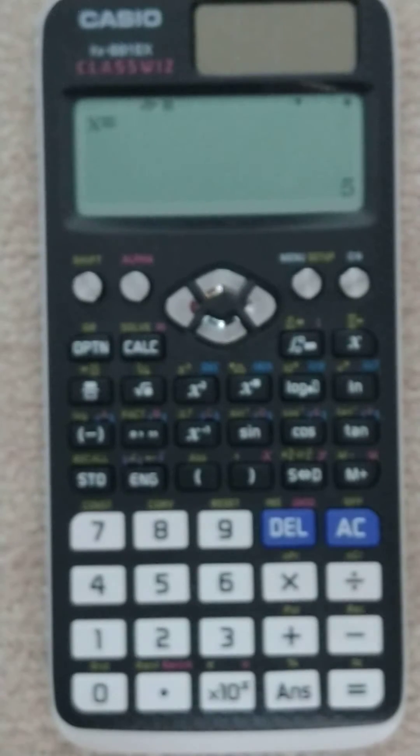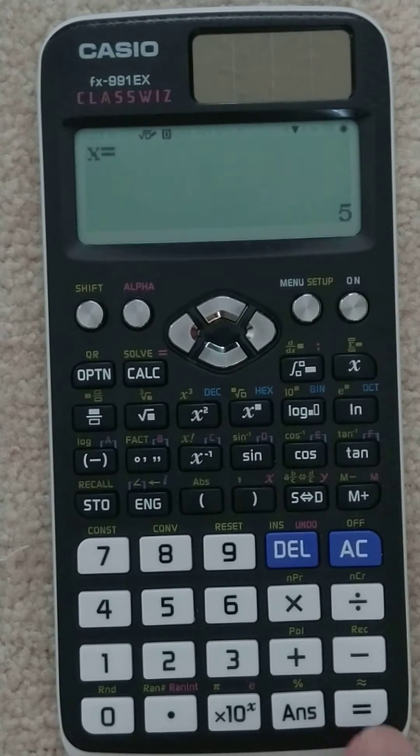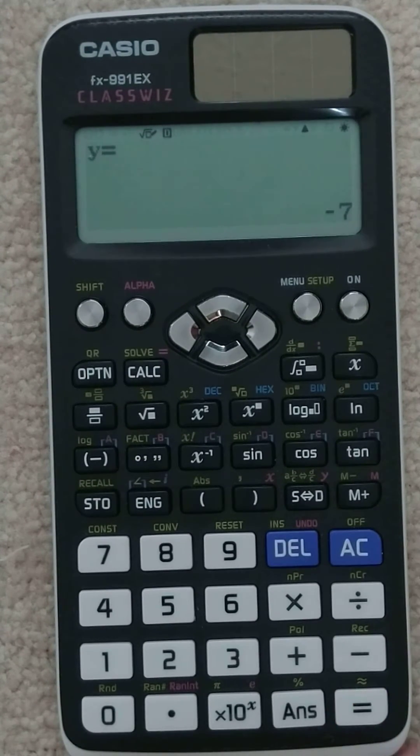x equals 5, and I don't know why this thing is doing that. And let's see. And then I hit equal again, y equals negative 7.